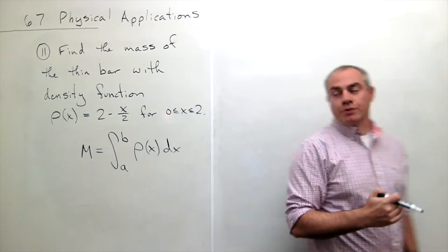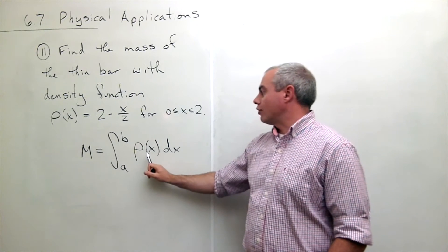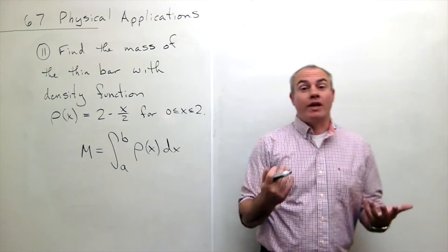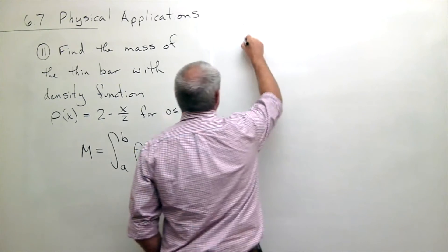So to find mass, we're just going to integrate from an x value to another x value over the density function. We have all this information. We just need to set it up and integrate it.